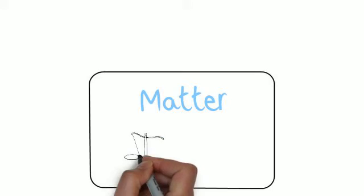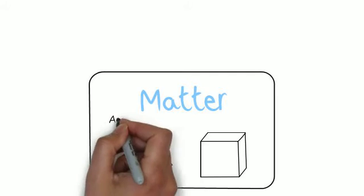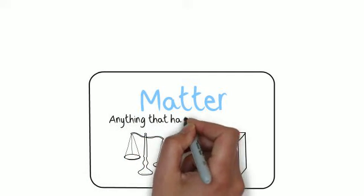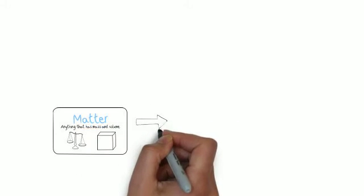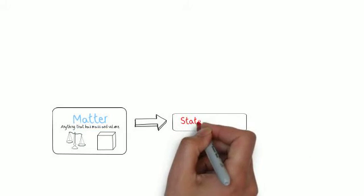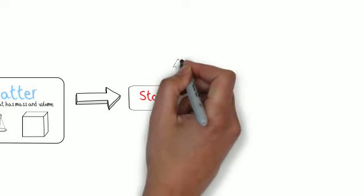And what matter is, is matter is anything that has a mass and a volume. A mass is an amount of stuff, which is why the picture is a balance. And the volume is anything that occupies space, which is why the cube is there. It's a 3D space. Now, once we understand what matter is, anything that has mass or volume, we can then start to break down matter.